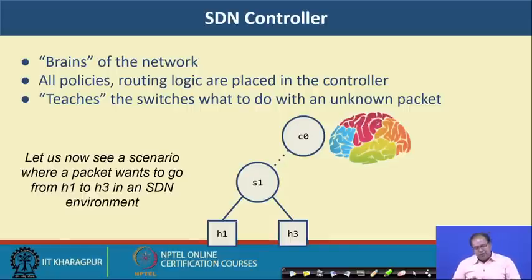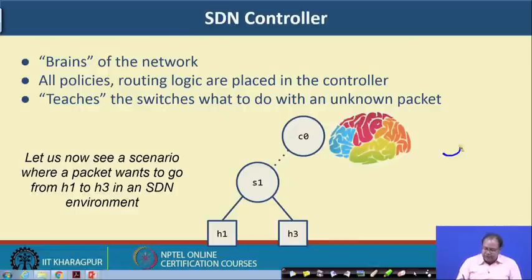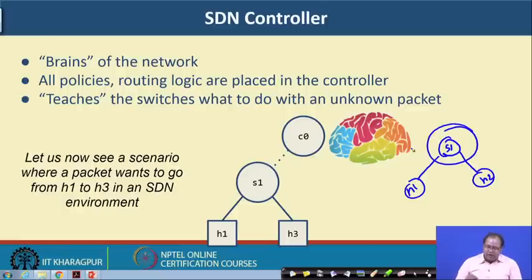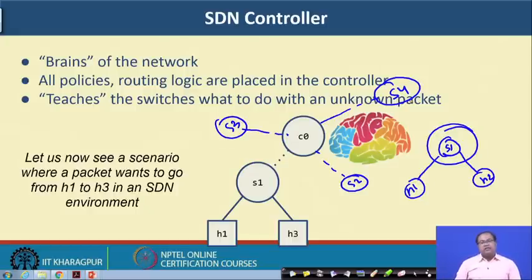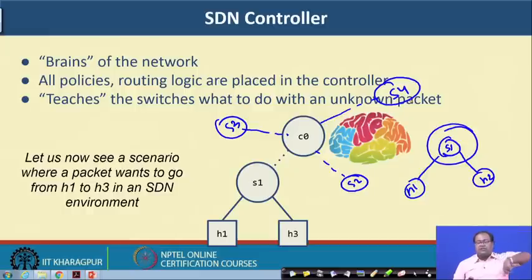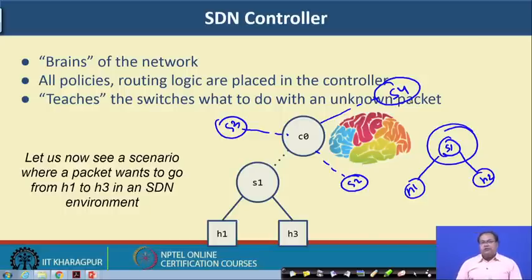In a traditional networking environment you only have switches and hosts, and the switch has the entire routing logic. In SDN, the routing logic is taken out from the switch and put into a controller. You can have multiple switches — indeed all the switches in an organization — connected to a single controller. The controller performs the routing logic in a centralized way, thereby avoiding the problems associated with distributed routing and reducing the overhead of distributed routing protocols.